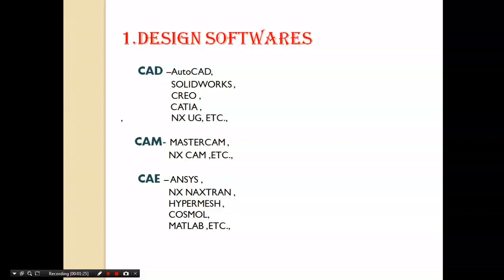The last category is CAE — computer-aided engineering. The main principle of all these softwares is to calculate withstanding load, temperature, vibration, etc. Some of the CAE softwares are ANSYS, Nastran, Hypermesh, COMSOL, and MATLAB.